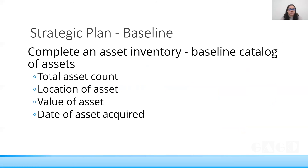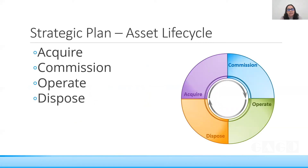The asset catalog includes the total count of all assets, where they will be installed, their location, the value of each asset, and the date of acquisition. The asset life cycle involves four stages: acquiring (purchasing), commissioning (installing), operating (checking how it works), and disposal. Once the life cycle of an asset is complete, it needs to be disposed of.